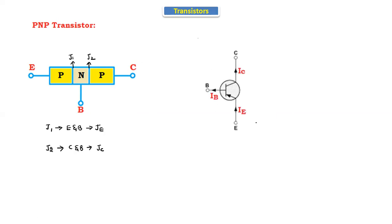Looking at the symbol of the PNP transistor, the emitter current direction is inside, and the base and collector current directions are outside. If we apply KCL, the sum of currents entering the node equals the sum of currents leaving the node. Here, the emitter current IE is entering, and the base current IB and collector current IC are leaving. So IE = IB + IC.